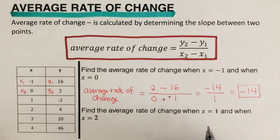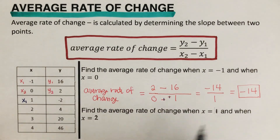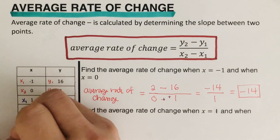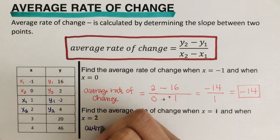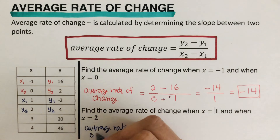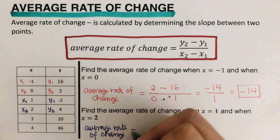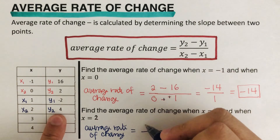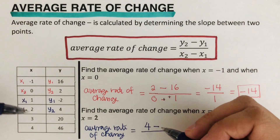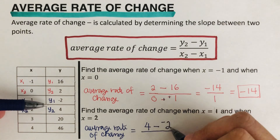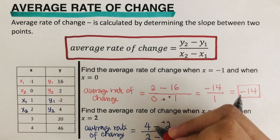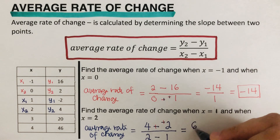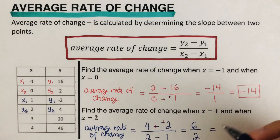So we go over the second problem here. When x is equal to 1, this would be our x sub 1, and x is equal to 2 is our x sub 2. We name the corresponding y-values as y sub 1 and y sub 2 and plug into the equation. The average rate of change equals y sub 2 which is 4, minus y sub 1 which is negative 2, over x sub 2 which is 2, minus x sub 1 which is 1. Changing the double negative to plus, that comes out to 6 over 1, which can be rewritten as just 3.